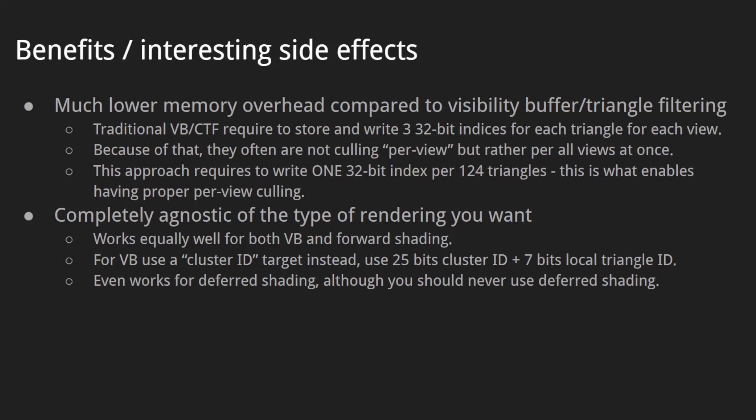What are the benefits and side effects? First, it has much lower memory overhead compared to the visibility buffer and triangle filtering. Traditional visibility buffer and CTF require storing and writing three 32-bit indices per triangle per view, so they're often not used for per-view culling but rather for all views at once — if a triangle is visible in one view, it's visible in all views. Our approach requires writing one 32-bit index per 124 triangles, which is dramatically lower and enables proper per-view culling, so a triangle visible in one view but not another will only be rendered into the first view.